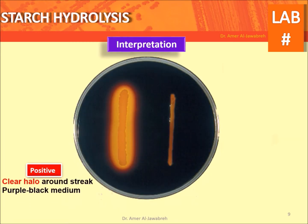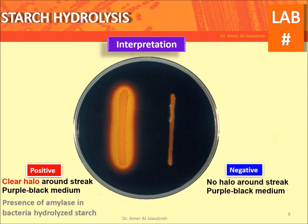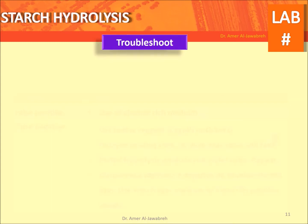Interpretation — Positive: a clear halo around the streak with a purple-black medium, indicating the presence of amylase in bacteria that hydrolyze starch. Negative: no halo around the streak with a purple-black medium, indicating the absence of amylase.